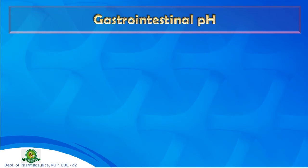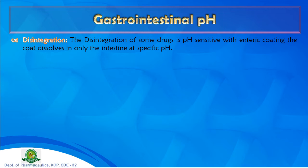Gastrointestinal pH is another important patient-related factor. GI pH generally increases as content moves from the stomach (pH 1–3) to the colon and rectum. This pH variation affects drug absorption. Under the topic of GI pH, we consider four aspects: disintegration, dissolution, absorption, and stability.